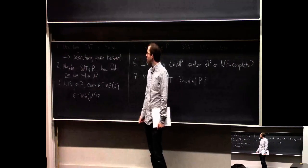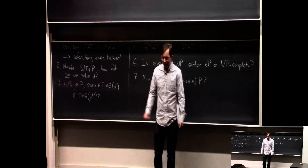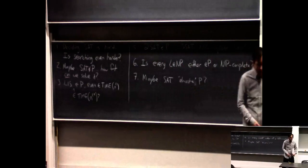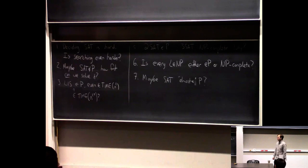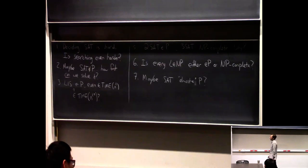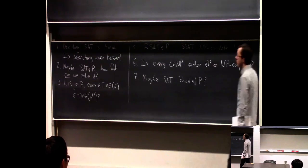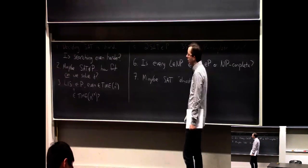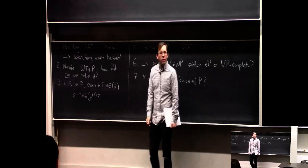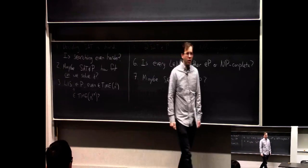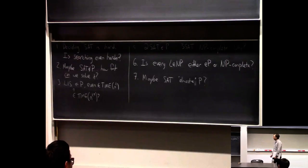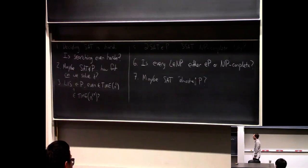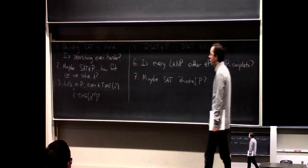But in life, if you have a SAT formula and maybe P equals NP, you can solve the SAT decision problem in polynomial time — is it satisfiable? Yes. But presumably at that point you want to actually find a satisfying assignment. Maybe that's harder. Another question: if we believe P does not equal NP, there's no polynomial time algorithm for SAT. But is there an algorithm that runs in time n to the log n — quasi-polynomial time — or 2 to the root n? What is the fastest algorithm for SAT?